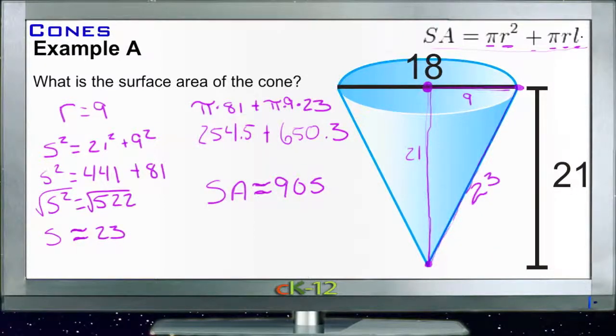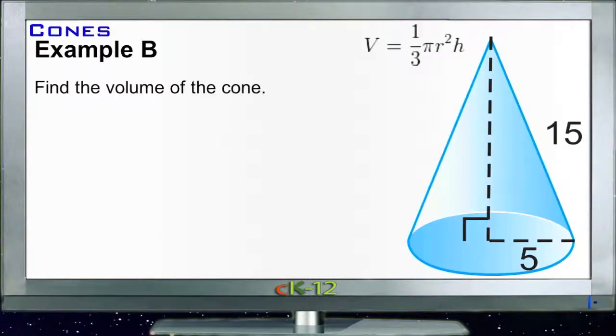Let's take a look at Example B. Example B says find the volume of the cone. For volume, we need to do one third of pi times the radius squared times the height. We do know the radius - the radius is 5. We don't know the height.